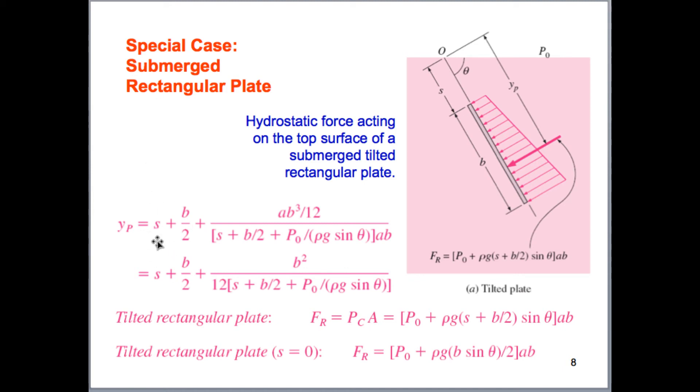So this takes into account the distance that this plate is submerged. s plus b over 2, which is y sub c, right? This is going to be y sub c. s plus b over 2 is y sub c, plus a little bit. And this is the moment of inertia for this rectangular plate.